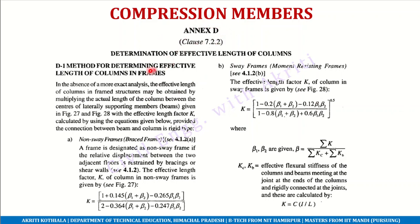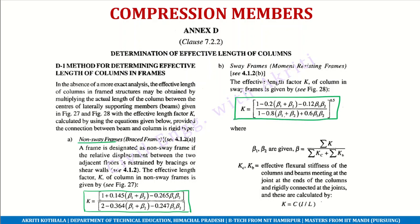In addition, Annexure D of IS 800-2007 on the determination of effective length of columns provides formulas. For non-sway frames and sway frames, separate formulas are available to calculate effective length. The parameters beta 1 and beta 2 are defined there, along with Kc and Kb. However, we use Annexure D very rarely — this is just for your knowledge that the formula is available there.